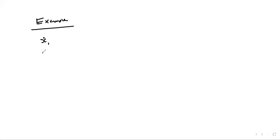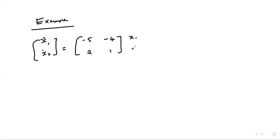We check whether P is positive definite; if so, the system is stable, and a Lyapunov function V(x) = xᵀPx exists. Let's put this into perspective with an example: determine the stability of a system defined by [ẋ₁, ẋ₂]ᵀ = [−5, −4; 2, 1][x₁, x₂]ᵀ using the Lyapunov stability criterion.